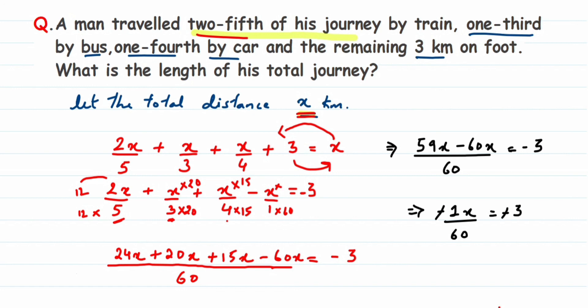The minus signs cancel on both sides. Transposing 60 to the other side, division becomes multiplication: x = 3 × 60 = 180. So the total distance traveled by the man is 180 kilometers. I hope that's clear — if you have any questions, drop a comment below. Thank you for watching!